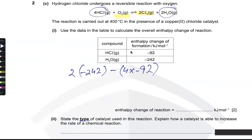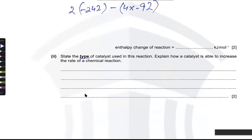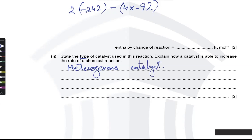There are two types of catalyst: homogeneous and heterogeneous. Homogeneous is in the same state as the reactants. The reactants are gases but the catalyst here is copper chloride — an ionic solid — so it is heterogeneous. When a question says 'state,' you just give a one- or two-word answer without a full sentence or reason.